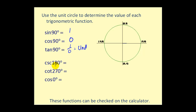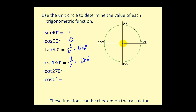For cosecant 180°, the terminal side points in the negative x-direction. Cosecant is the reciprocal of sine, so it equals 1 over y. At 180°, the y-coordinate is 0, making cosecant 180° undefined. For cotangent 270°, the terminal side points downward; we're looking at the point (0, -1). Cotangent is x over y, so that's 0 over -1, which equals 0.